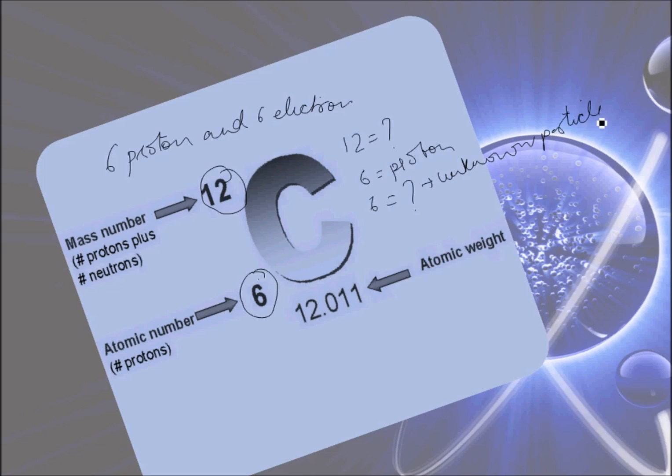As we know that the mass of electron is so small that it can be ignored, so the atomic mass of carbon should be only 6, which is the mass of the 6 protons. This however is wrong because the actual atomic mass of carbon is 12. Then how do we explain this extra mass of 6 units?